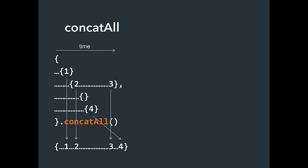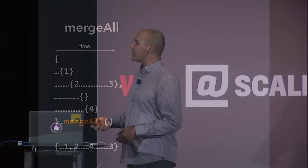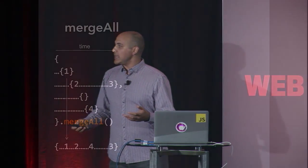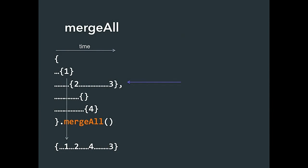Merge-all is like five lanes merging into one — data comes out in the order it arrives, not in the order the Observable collections themselves arrived. We foreach over each inner observable as it comes and return data immediately. So we might get data out of order — four before three — because it's just as soon as the data comes along we return it.